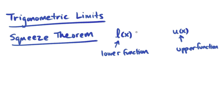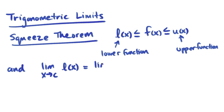We're going to situate our function, f of x, in between. So f of x sits below the upper function and above the lower function. The limit as x approaches c of the lower function is the same as the limit as x approaches c of the upper function, and we'll call that limit L.